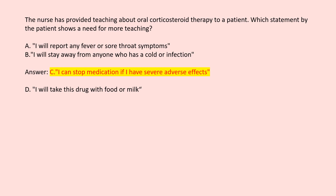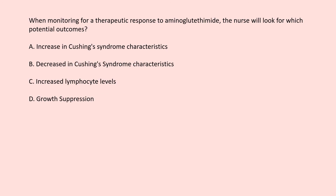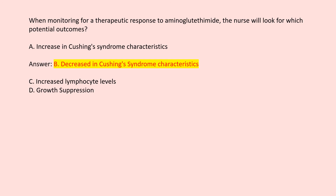When monitoring for a therapeutic response to aminoglutethimide, the nurse will look for which potential outcomes? A. Increase in Cushing's syndrome characteristics. B. Decrease in Cushing's syndrome characteristics. C. Increased lymphocyte levels. D. Growth suppression. Answer B. Decrease in Cushing's syndrome characteristics.